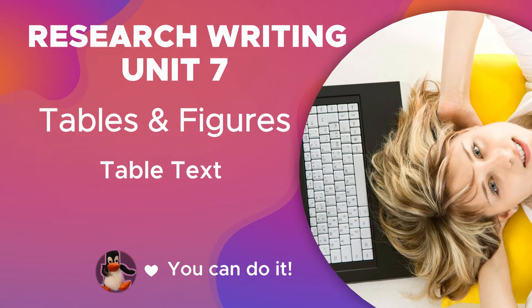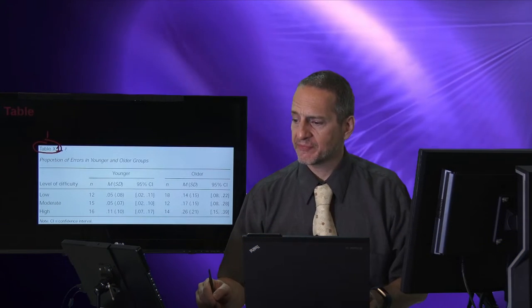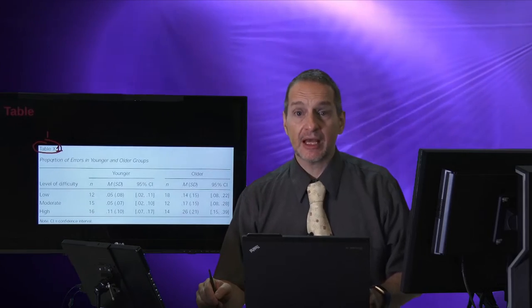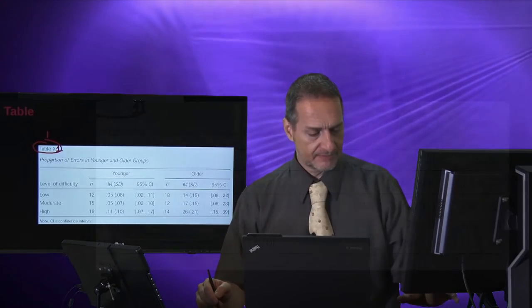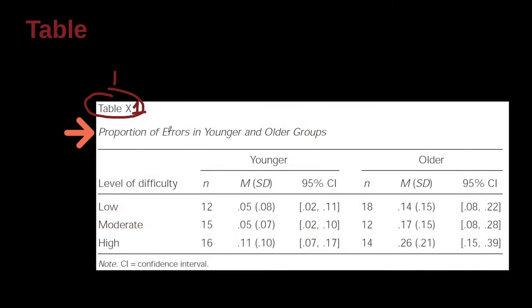So let's go with some more of the basics. Here we have a table, and you can see the word here, table, with the number. So this could be 1, for example. And then we have the title.